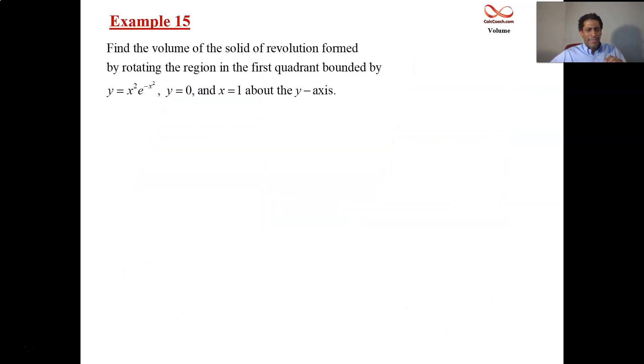Here we have a strange function that you're not going to be able to graph yourself, x squared times e to the negative x squared, x equals 1, and then y equals 0. Rotate it about the y-axis. That graph would probably be provided for you. Then you make a carbon copy. You're going to argue which method to choose. Washer is done in a manner that is perpendicular to the axis of rotation, and shell is done in a manner that is parallel to the axis of rotation. What's the axis of rotation? It's the y-axis.